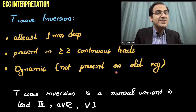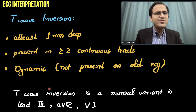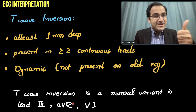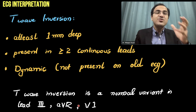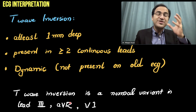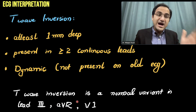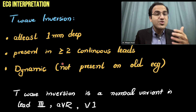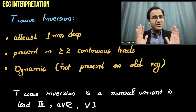It should not be present in an old ECG — the patient should have newly developed T wave inversion. Remember: T wave inversion is a normal variant in lead 3, AVR, and V1. So do not consider these three leads when looking for T wave inversion. In any other leads, T wave inversion in two or more contiguous leads indicates subendocardial ischemia.